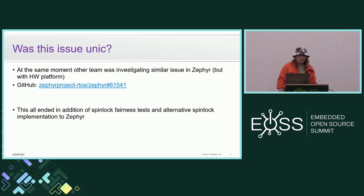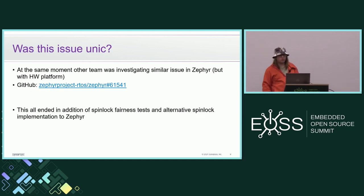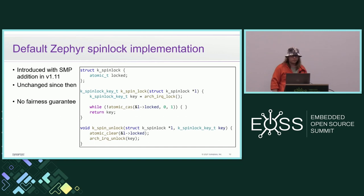After a portion of debugging, we found that we had bumped into a livelock, and it was possible due to the combination of how our simulation works and how Zephyr spinlocks are implemented. The answer to whether we were the only ones bumping into such things is no — at the same time, a different team from a different company was investigating a similar issue with Zephyr, but in their case it was a hardware platform with RISC-V. We discussed our findings with them and the result was the addition of a spinlock fairness test and an alternate spinlock implementation to Zephyr.